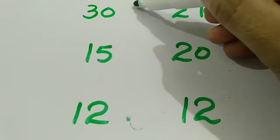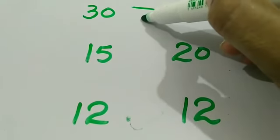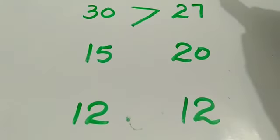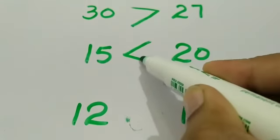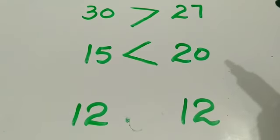So 30 is greater than 27. 15 is less than 20.